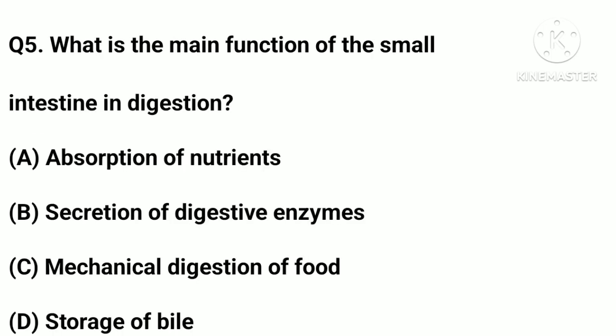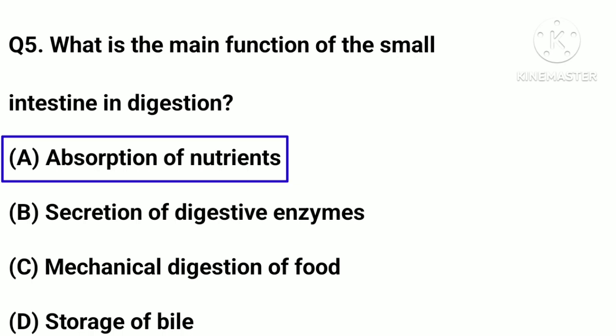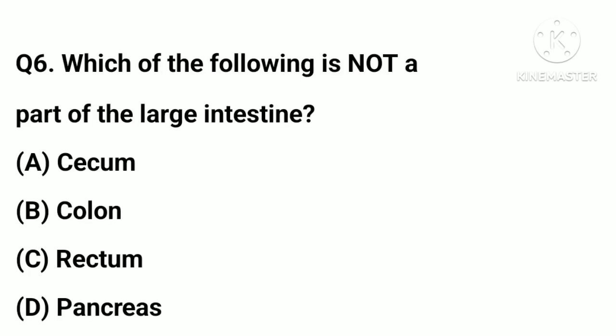Question number five: What is the main function of the small intestine in digestion? Option a: absorption of nutrients. Option b: secretion. Option c: mechanical digestion of food. Option d: storage of bile. Answer: option a, absorption of nutrients.